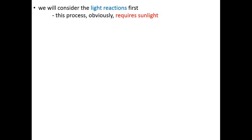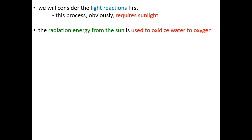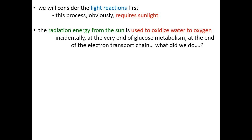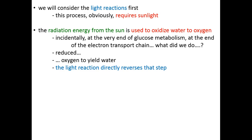This process obviously requires sunlight — that's why they're called the light reactions. The radiation energy from sunlight is used directly to oxidize water to oxygen. Sunlight energy strips electrons from water, and where the electrons go, the protons follow, leaving behind oxygen that is released. It's the electrons that plants are after. Notably, at the very end of the electron transport chain, Complex 4 reduced oxygen to yield water. So photosynthesis is the opposite: the very first step — oxidizing water to oxygen — is the reverse of the last step of the electron transport chain.